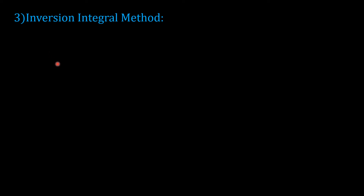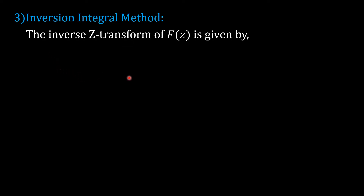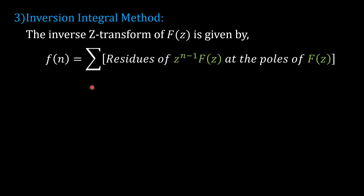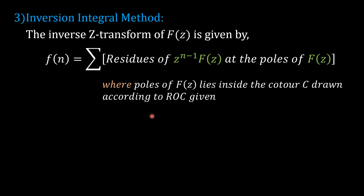Inversion integral method. The inverse Z-transform of F using this method is given by the formula: f is equal to the summation of residues of Z raised to n-1 into F, at the poles of F, where the poles of F lie inside the contour or the closed curve drawn according to the region of convergence given.